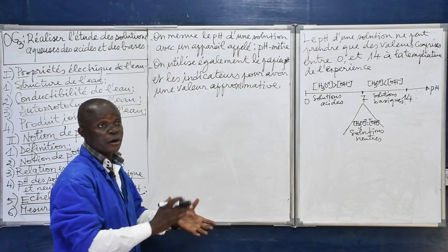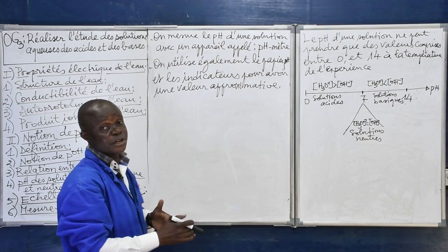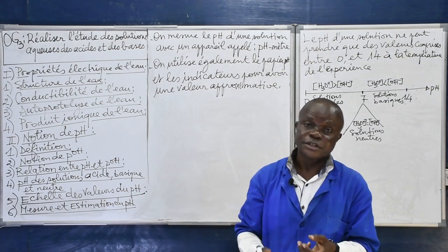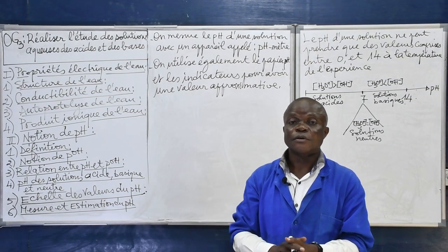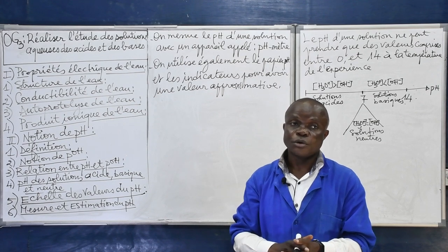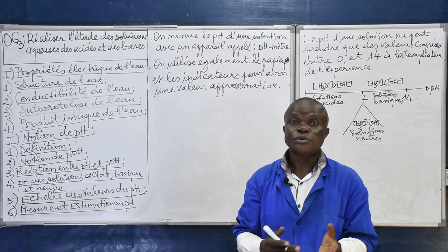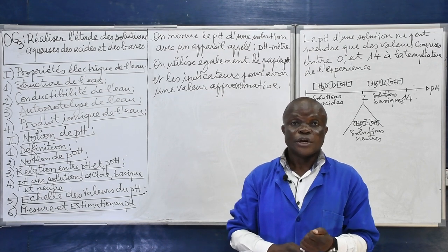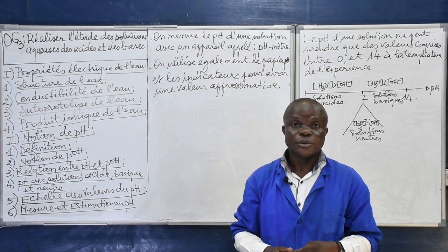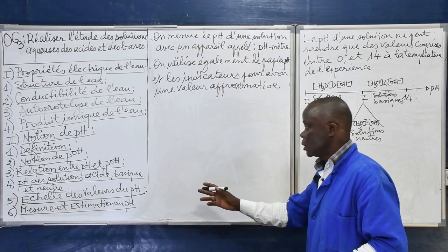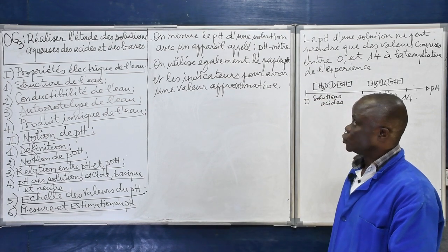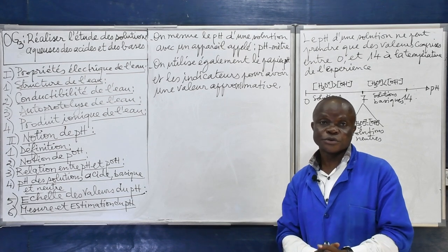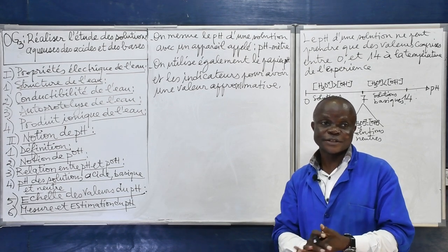Parmi les indicateurs colorés, en classe de troisième par exemple, vous avez vu la phénolphtaléine, l'éliantine, le bleu de bromotimol. Ce sont les indicateurs colorés qu'on utilise pour connaître le pH d'un milieu. Pour aujourd'hui, on va s'arrêter là. On va continuer prochainement. Merci.